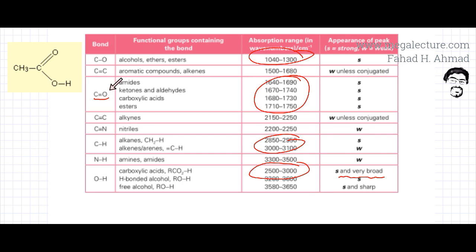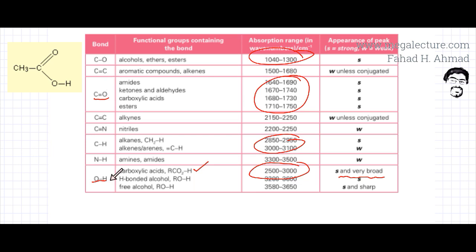So this C=O bond is always uniquely identifiable in an infrared spectrum. Some other bonds that are very uniquely identifiable are the OH bonds — especially the OH bond in carboxylic acid, because it has a strong and very broad absorption. So whenever you're given an infrared spectrum, always look out for either the C=O bond or the OH bond in carboxylic acid, because all the other infrared absorptions are going to be very doubtful since their frequencies are all mixed up.